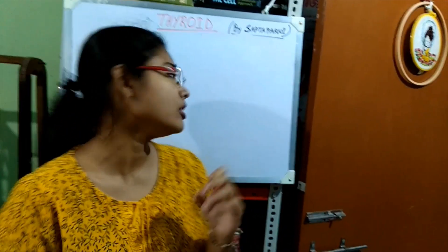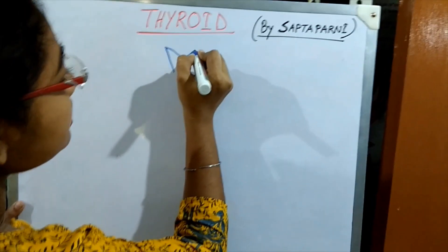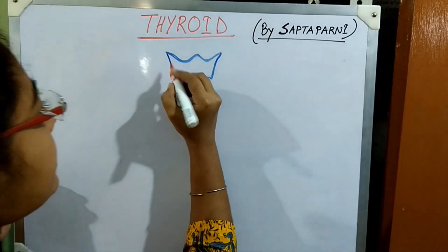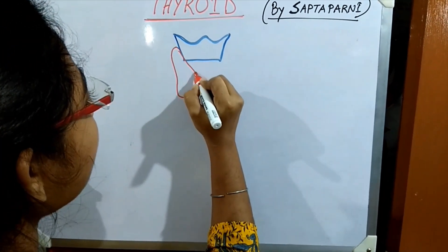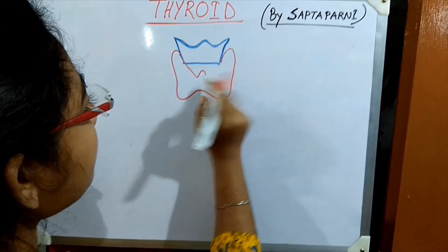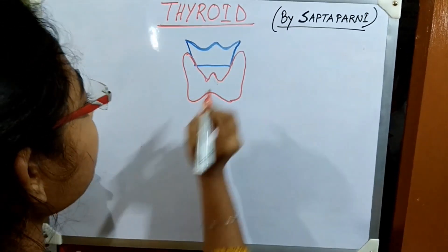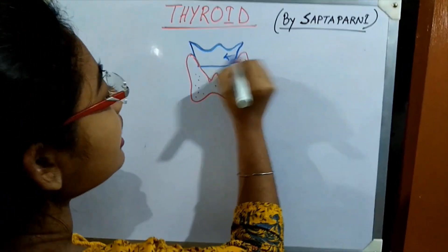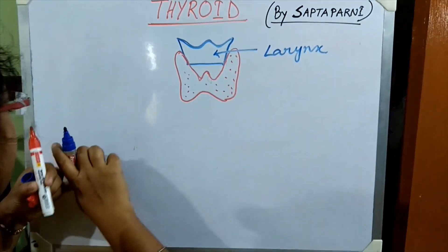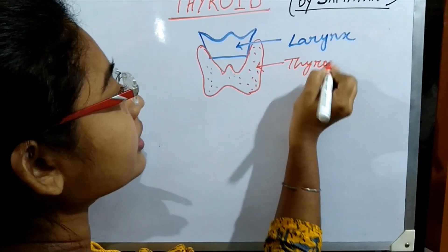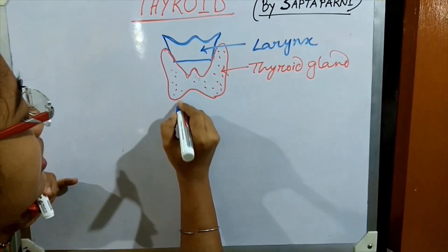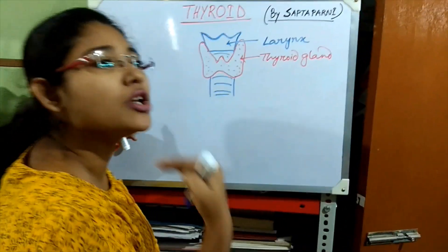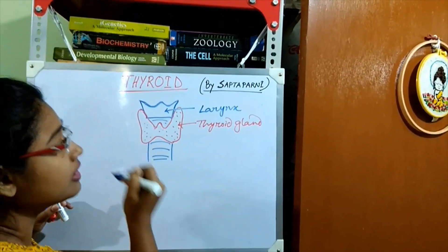Let's draw the structure of the thyroid gland. If this is our larynx, then the thyroid gland is situated just below the larynx. You can also find the trachea below. The location of the thyroid gland is just below the larynx.